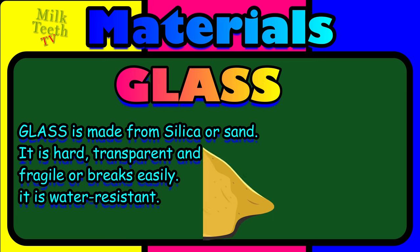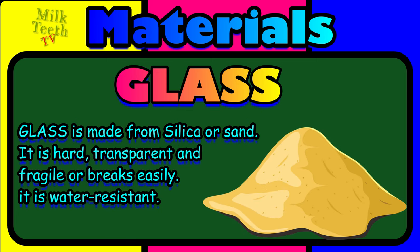The third type of material is glass. Glass is made from silica or sand. It is hard, transparent, and fragile — it breaks easily. But it is water resistant.